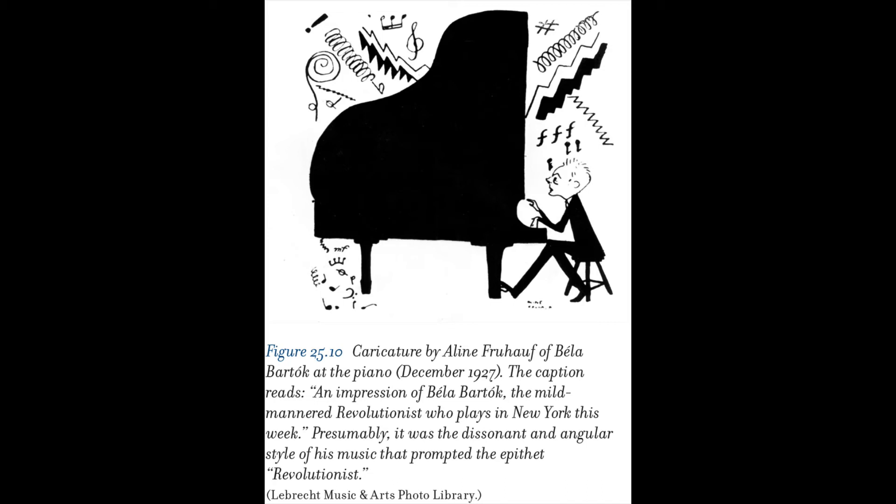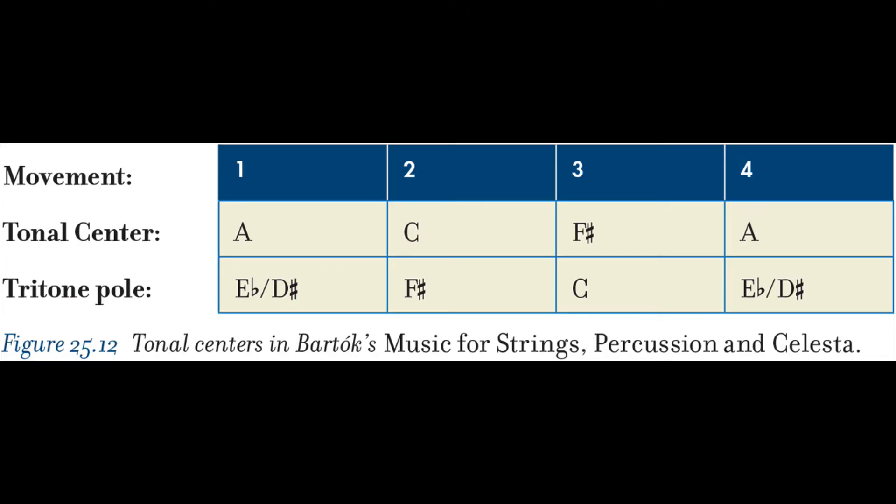Bartók drew on the classical tradition from Bach to Brahms for his early compositions, then absorbed influences from Strauss, Debussy, Schoenberg, and Stravinsky. His Microcosmos (1926–1937) is a series of graded piano pieces that summarizes his style, including works that push the limits of dissonance as well as those more accessible to a broad audience.